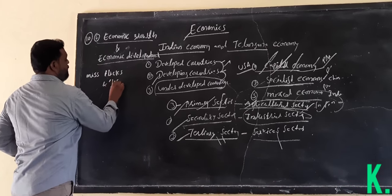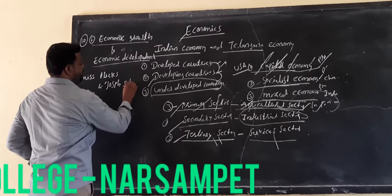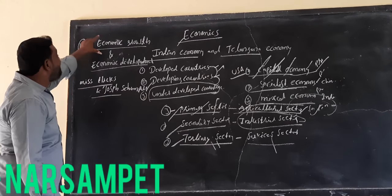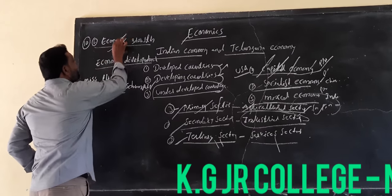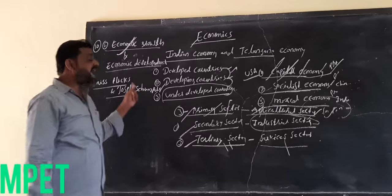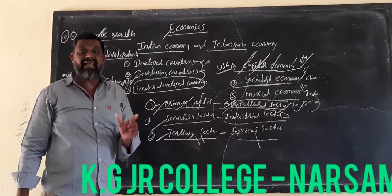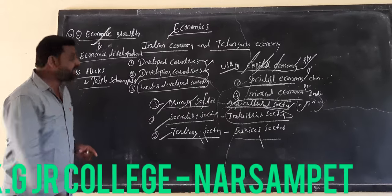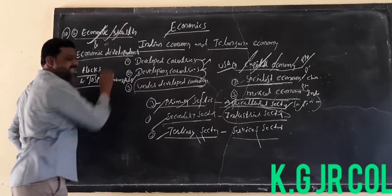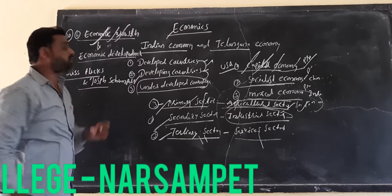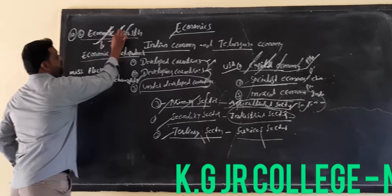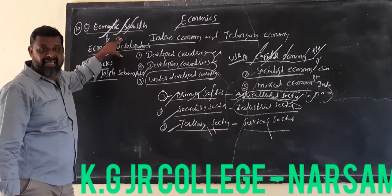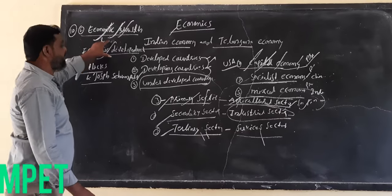Joseph Schumpeter gave them different types of meaning. Economic growth may be defined as a steady and continuous rise in aggregate real output in a country during a given period of time. Economic development means not only economic growth but also progressive changes in the socio-economic structure of a country during a given period of time.